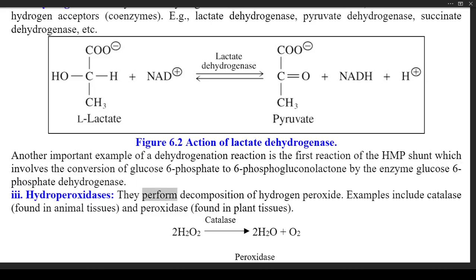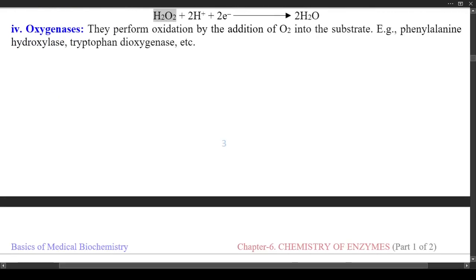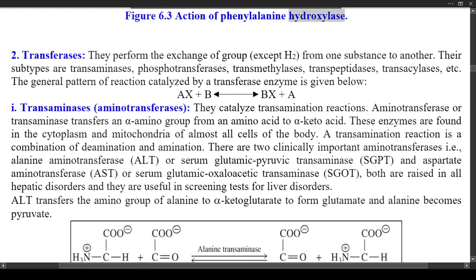(3) Hydroperoxidases — they perform decomposition of hydrogen peroxide. Examples include catalase, found in animal tissues, and peroxidase, found in plant tissues. Catalase: 2H₂O₂ → 2H₂O + O₂. Peroxidase: H₂O₂ + 2H⁺ + 2e⁻ → 2H₂O. (4) Oxygenases — they perform oxidation by the addition of O₂ into the substrate; e.g., phenylalanine hydroxylase, tryptophan dioxygenase, etc. Figure 6.3 shows the action of phenylalanine hydroxylase.